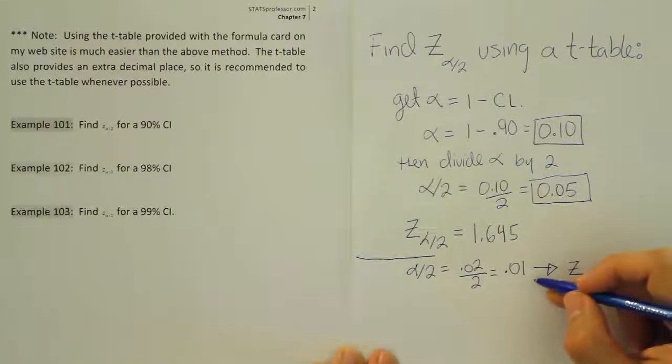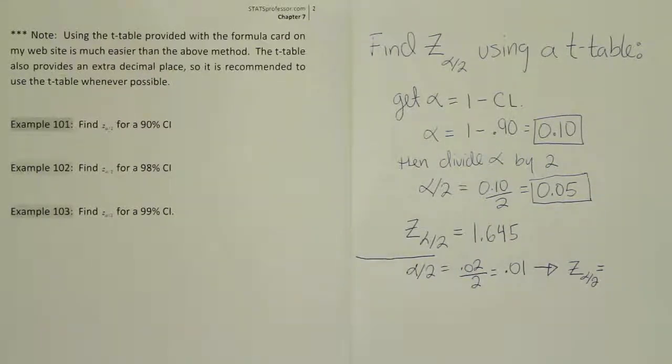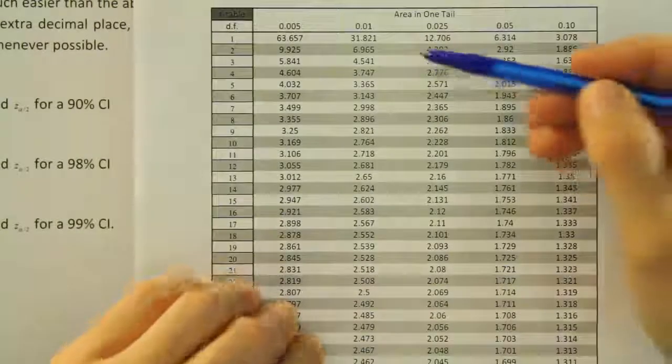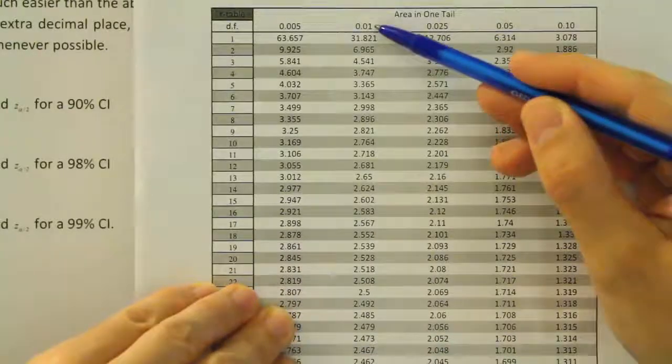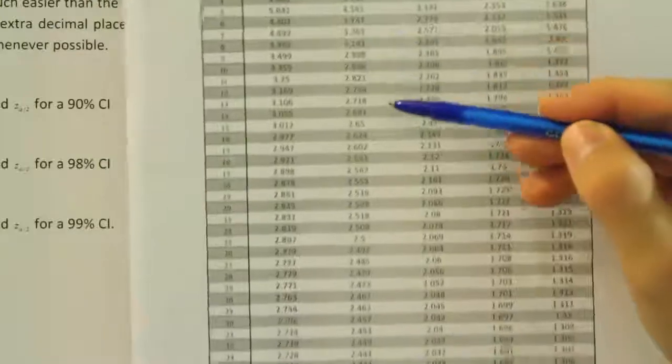We're going to look up 0.01 in the one tail all the way down to the bottom of the table, and we'll find our corresponding z alpha divided by 2 value. Okay, so here we are at our t-table, and we're looking at the area in one tail, and in this example it was 0.01. So we're going to go straight to the bottom of this column and see what number we find.